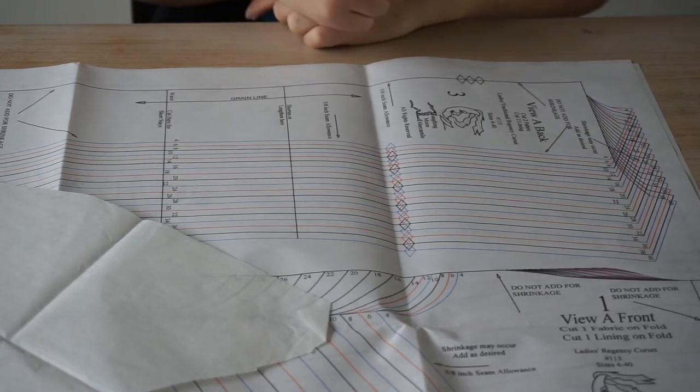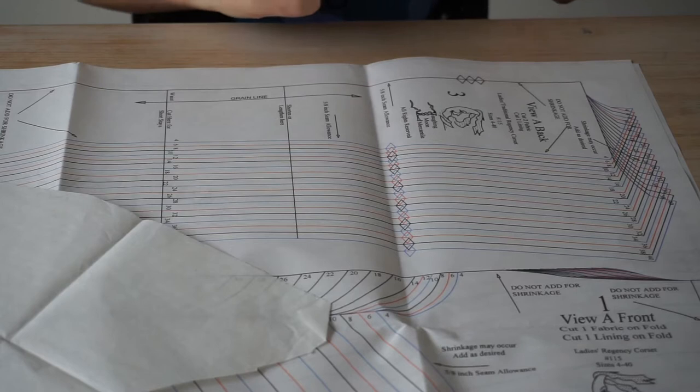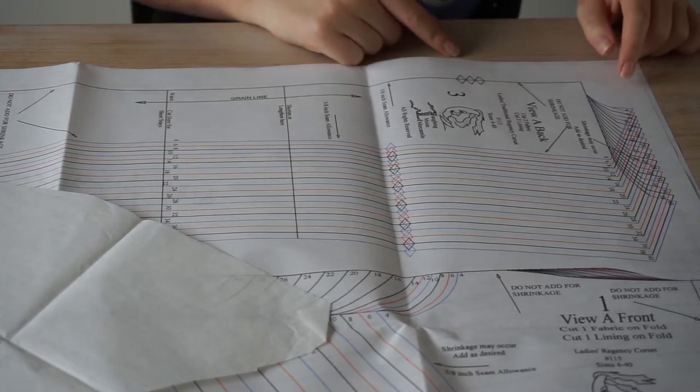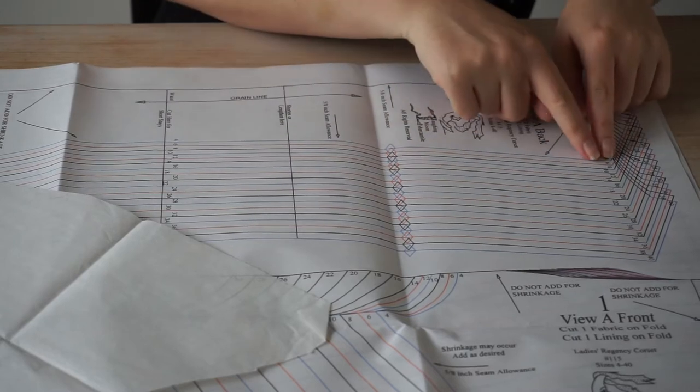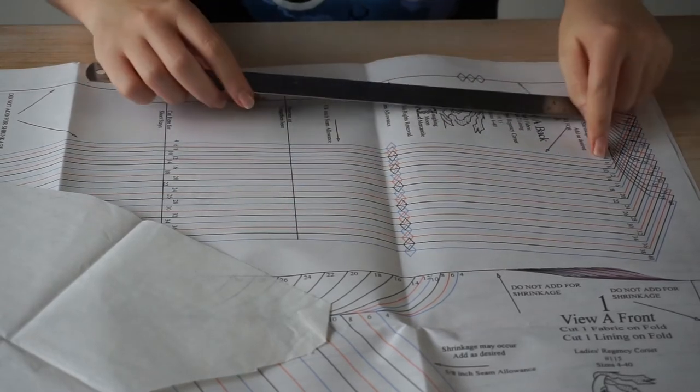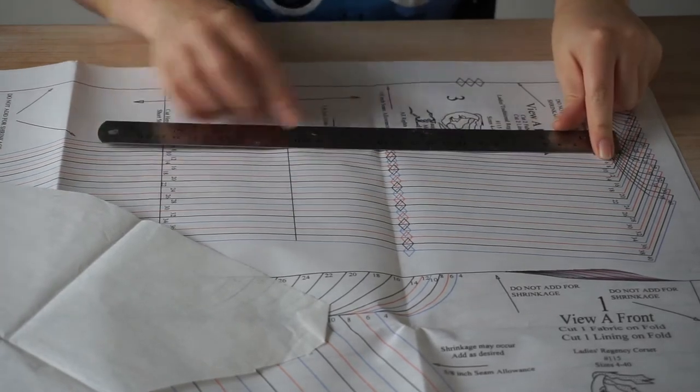For this pattern I'm right between a size eight and ten. Doubly eight and twelve. Which means that I will have to draw in between sizes, aka I have to draw from one line to the other.